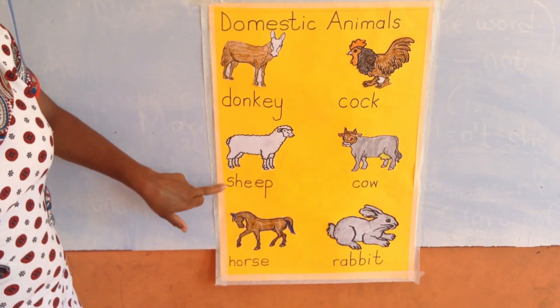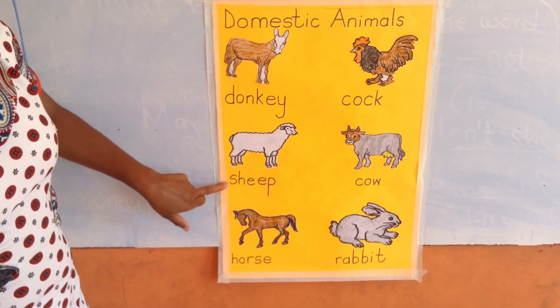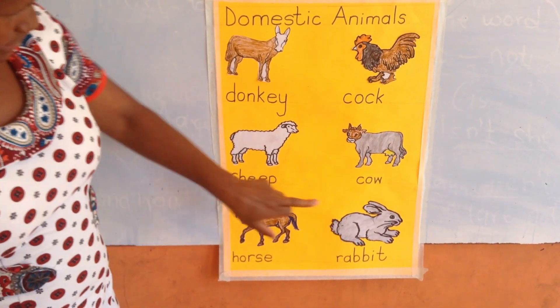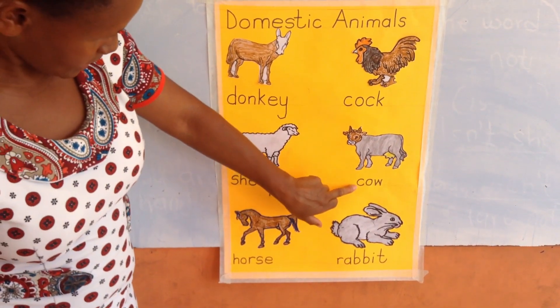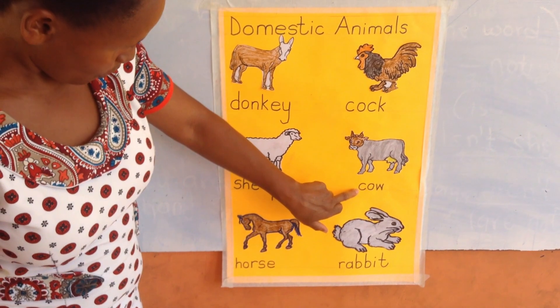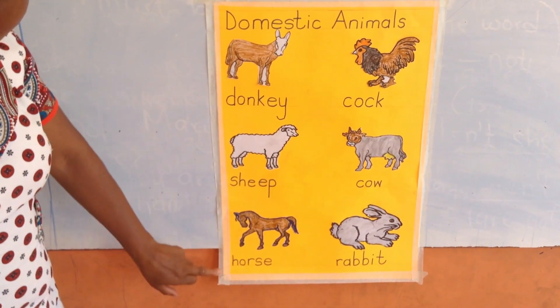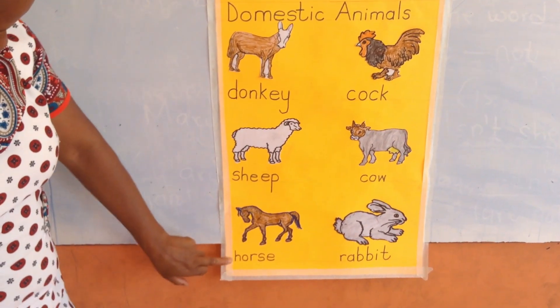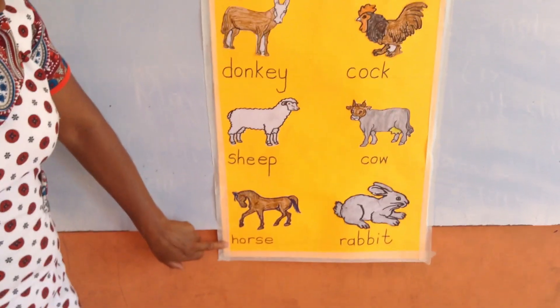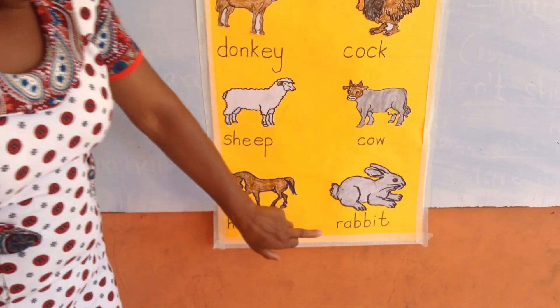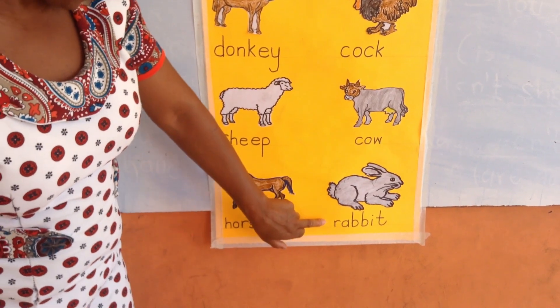Then we have sheep. The next animal is cow. Then the other animal is horse. And then I have rabbit.